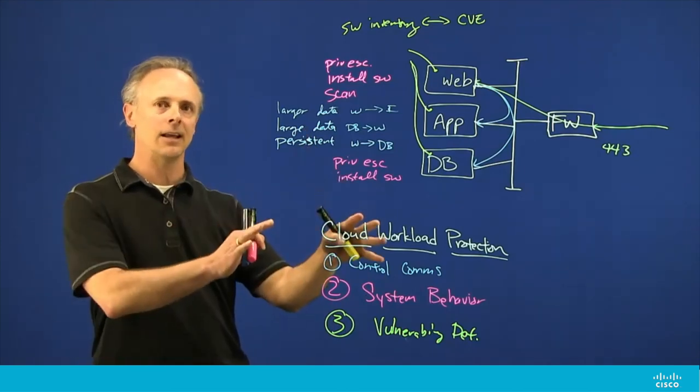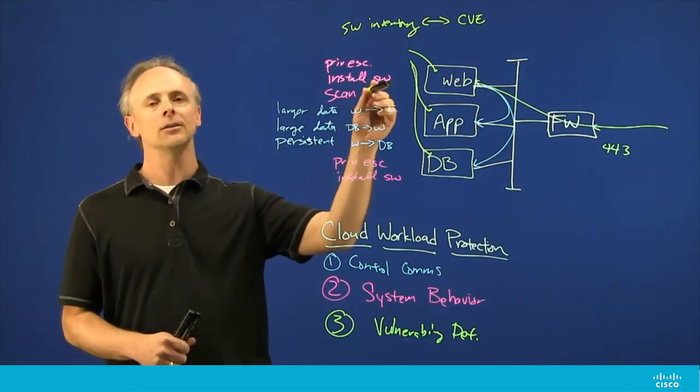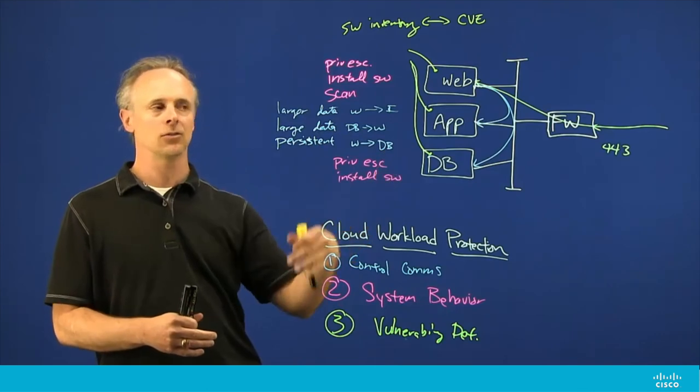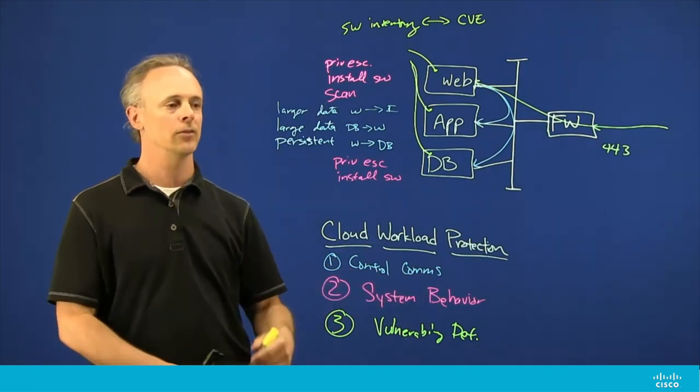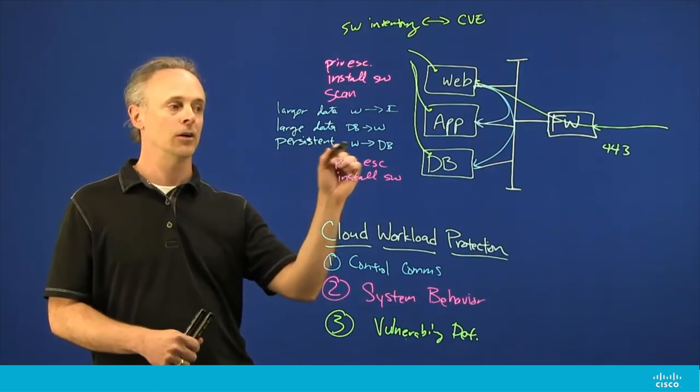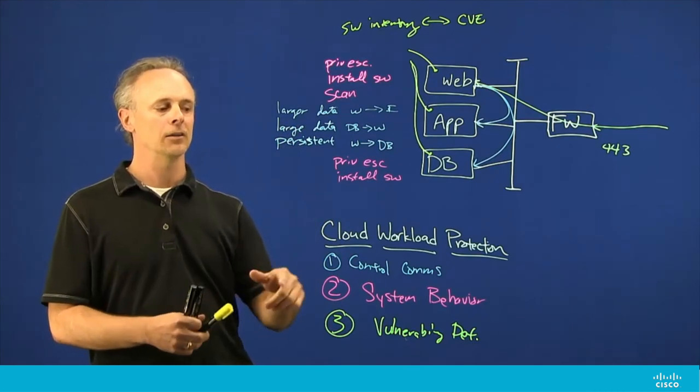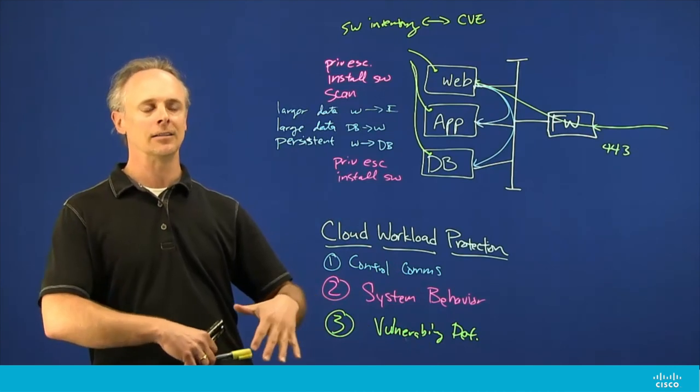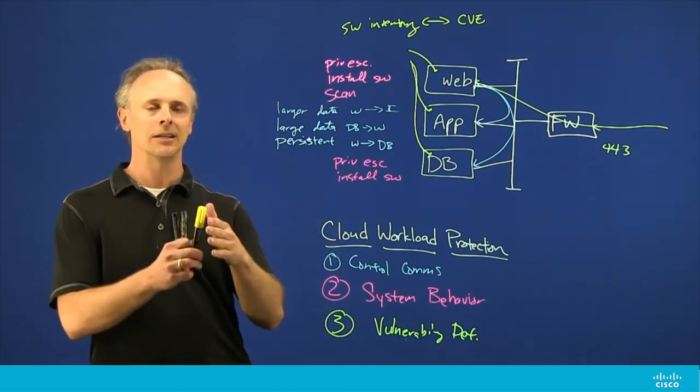If they had had something like this cloud workload protection from Tetration in place ahead of time, they could have run a scan and said we just got a notification that there is a known vulnerability in Struts. We could do a quick report that says these 10 servers or 20 servers or these two VMs that are running Apache Struts are vulnerable to this version. It actually allows us to do some communications control where we can say if I find something that's got a significant impact vulnerability to us, I'm actually going to shut that down until I can get that remediated.